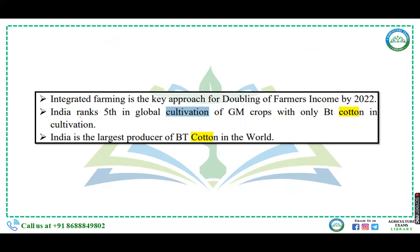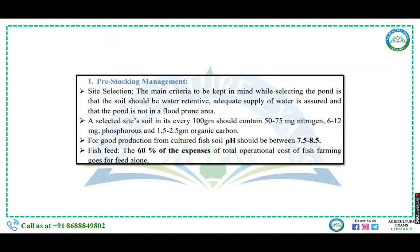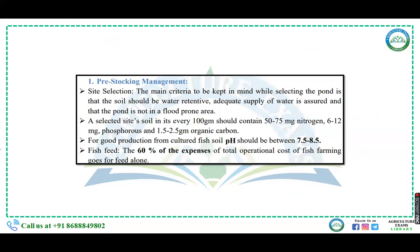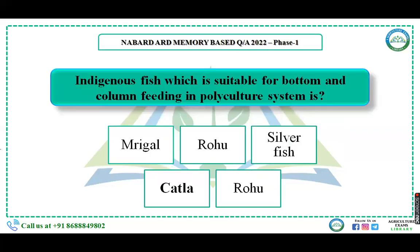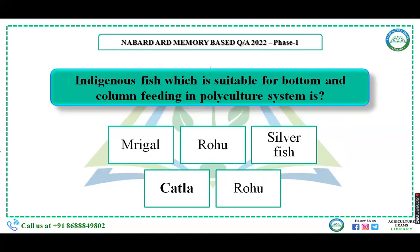The optimum pH required for most fresh water species — options were 3.5 to 5, 4.5 to 5, 6.5 to 10, 5.5 to 7.5, and 11 to 14. The right answer is 6.5 to 10. For good production from cultured fish, soil pH should be between 7.5 to 8.5. The indigenous fish suitable for bottom and column feeding in polyculture system is Catla — a surface feeder.